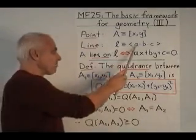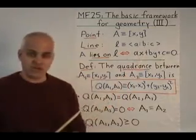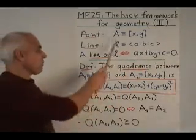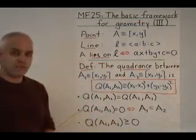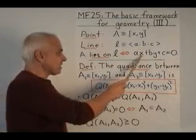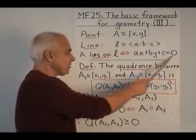A line is a proportion of three rational numbers. And we say that the point A lies on the line L precisely when A times X plus B times Y plus C equals zero.